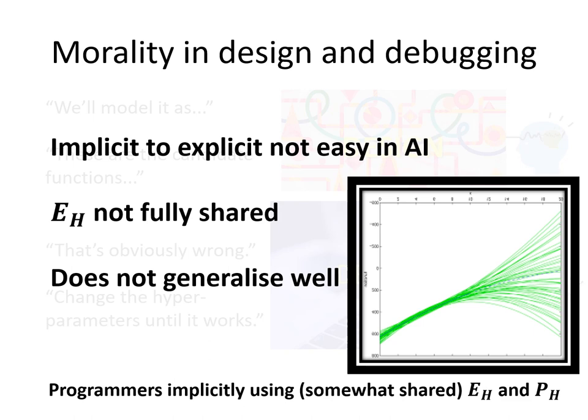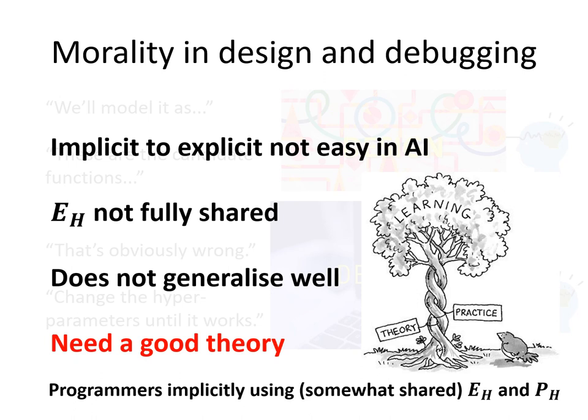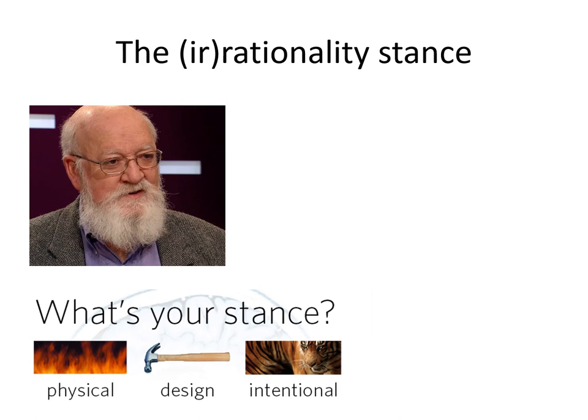The other problem is that this does not generalize very well. If we tune our hyperparameters or programs locally via our implicit module, when we extrapolate, we're likely to encounter situations where our extrapolated values go quite wild. In order to get around this and ground a definition of human preferences, we need a good theory. The sketch of such a theory is what I'm going to present in the rest of this talk.